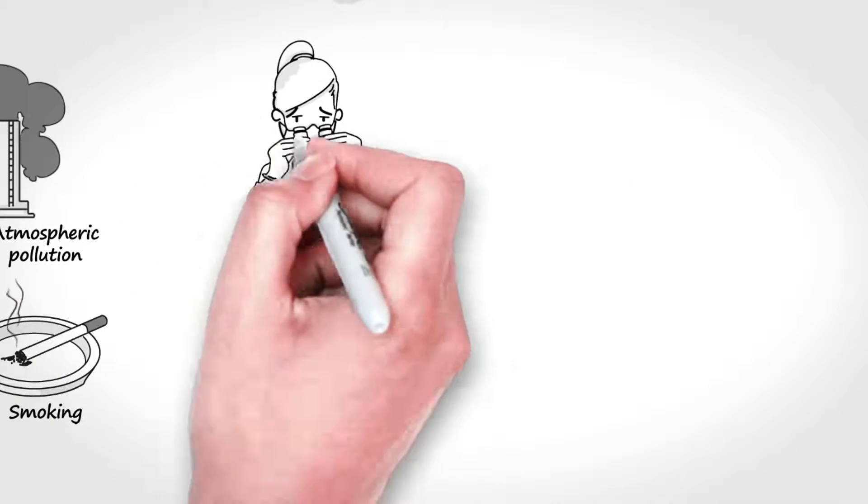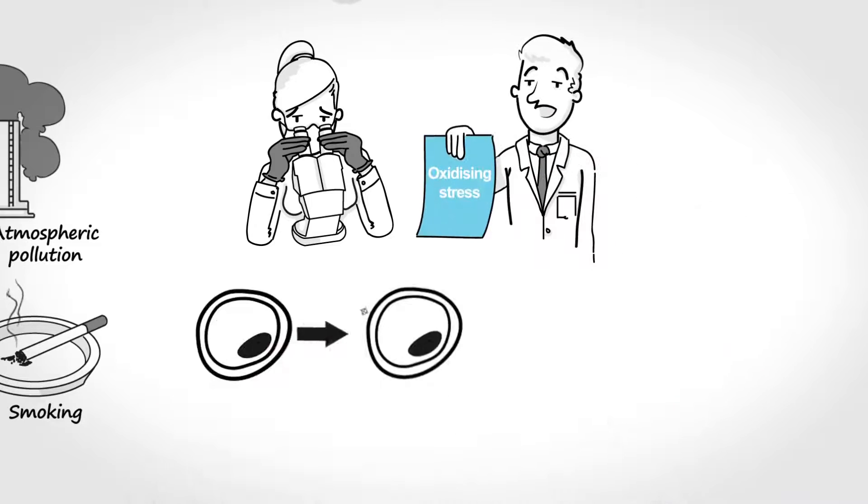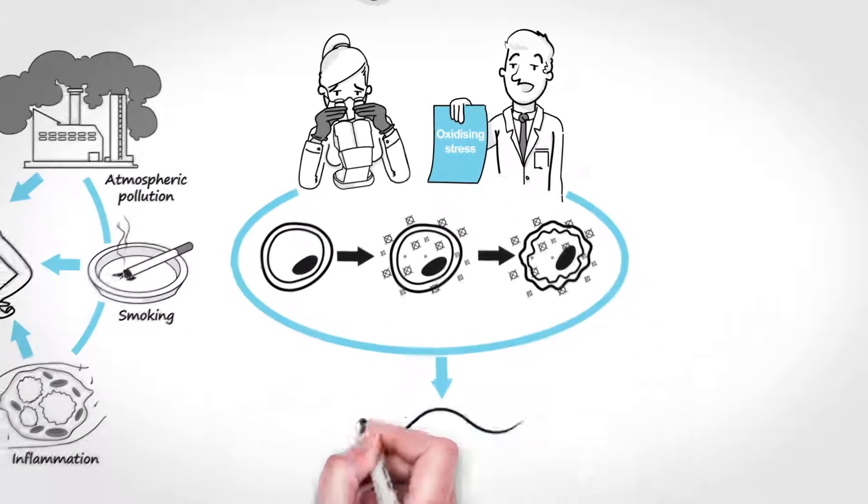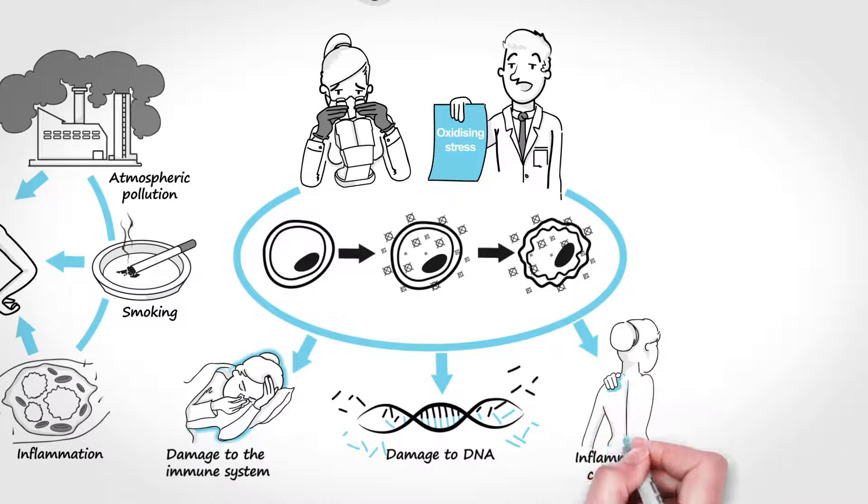Researchers have named these harmful effects for cells produced by free radicals as oxidizing stress, which can cause damage to DNA, damage to the immune system, inflammatory conditions, and other various illnesses.